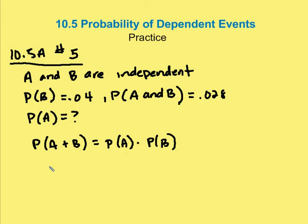So we know the probability of A and B is 0.028. We know the probability of B is 0.04. And we can calculate, then, by dividing 0.028 by 0.04, that the probability of A is going to be 0.7.